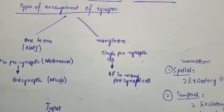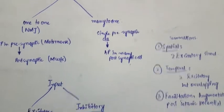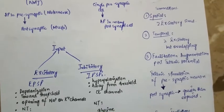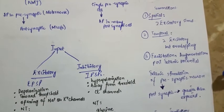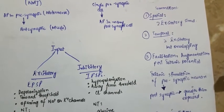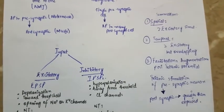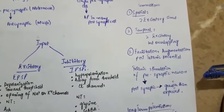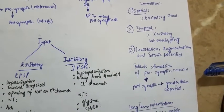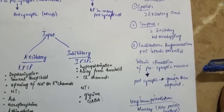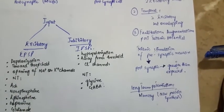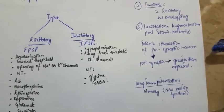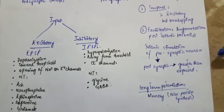Regarding the input of the presynaptic membrane, there are excitatory and inhibitory types. Excitatory post-synaptic potentials lead to depolarization of the motor end plate toward threshold, with opening of sodium channels. Excitatory neurotransmitters include acetylcholine, norepinephrine, epinephrine, dopamine, glutamate, and serotonin.